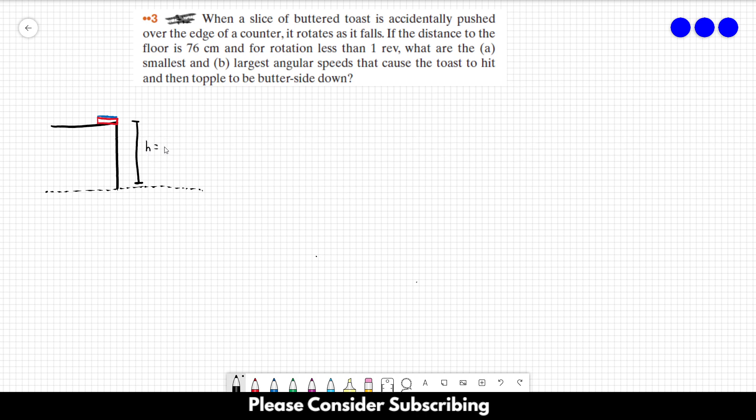We can find the time it takes to hit the floor using this equation: x equals x₀ plus v₀t plus at squared over two. In this case, let's say that this position is h, this is zero.